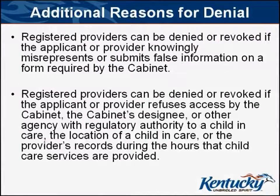Additional reasons for denial continued: Registered providers can be denied or revoked if the applicant or provider knowingly misrepresents or submits false information on a form required by the cabinet. Registered providers can also be denied or revoked if the applicant or provider refuses access by the cabinet, the cabinet designee, or another agency with regulatory authority to a child in care, the location of a child in care, or the provider's records during the hours that child care services are provided.